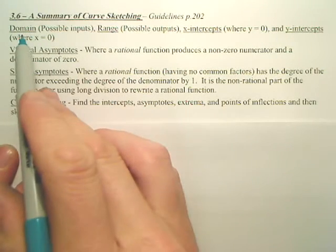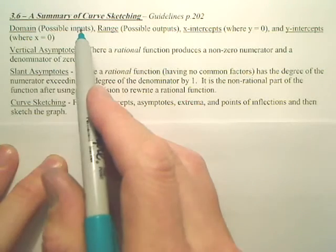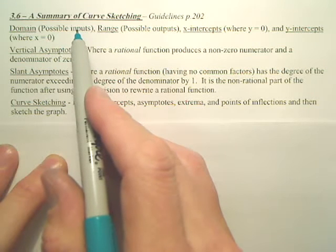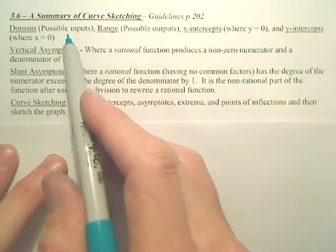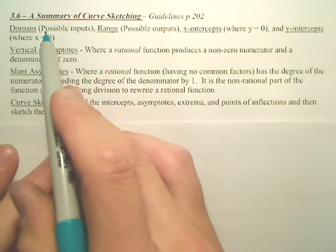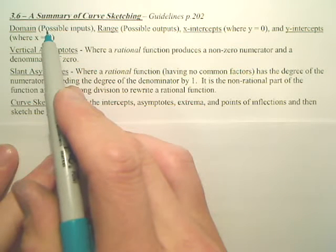Okay, curve sketching. Domain are your possible inputs. Meaning, if you have a square root, are there some values that won't work? If you have a fraction, are things on the denominator going to have issues? So the first thing you need to do is look at your graph, look at what values mess it up. Where is it not continuous? That's your domain.